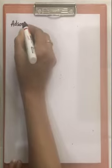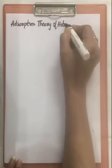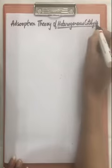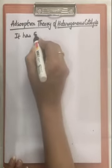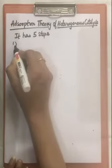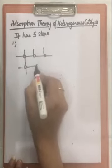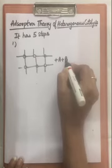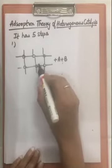Our next topic is adsorption theory of heterogeneous catalysis. Heterogeneous catalysis is based on adsorption phenomenon and this has five steps. Suppose this is a catalyst and these two are reactants. The first step is that reactants diffuse on the surface of catalyst — they move towards the surface of a catalyst.